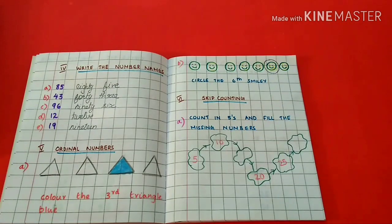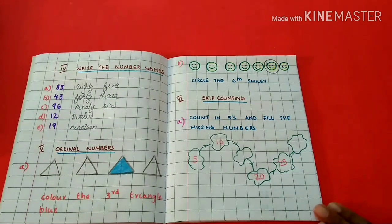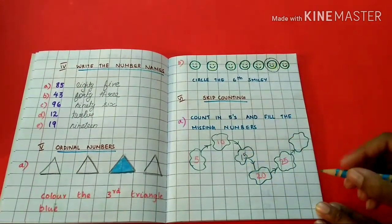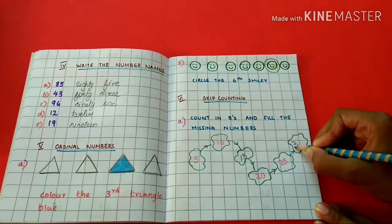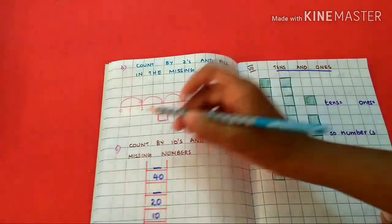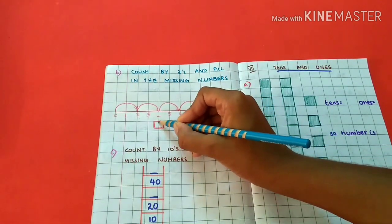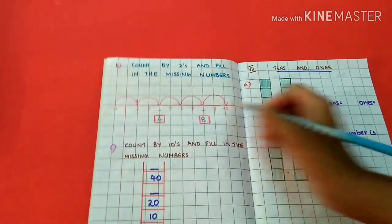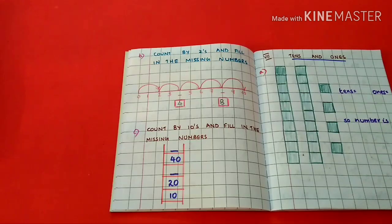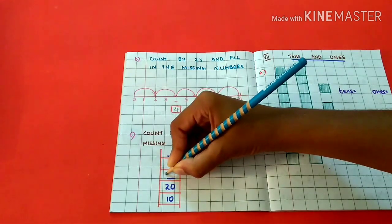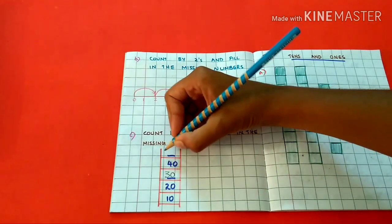Skip counting — count in 5's and fill the missing numbers: 5, 10, 15, 20, 25, 30. Count by 2's and fill in the missing numbers: 2, 4, 6, 8, 10. Count by 10's and fill in the missing numbers: 10, 20, 30, 40, 50.